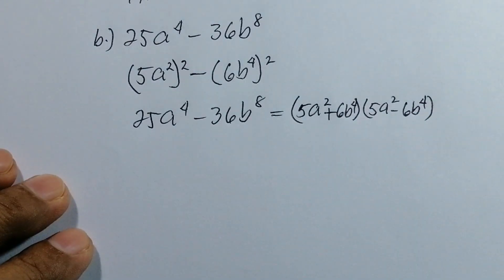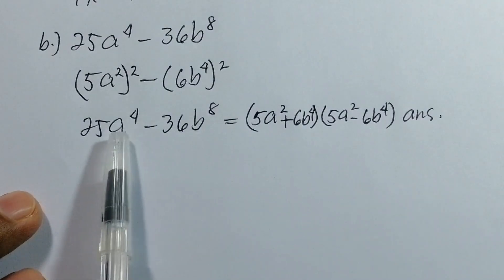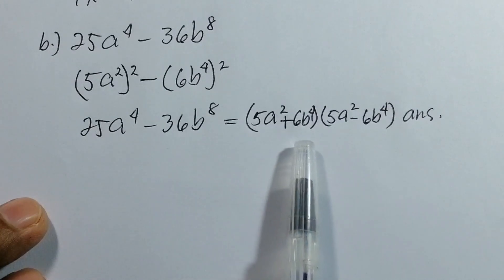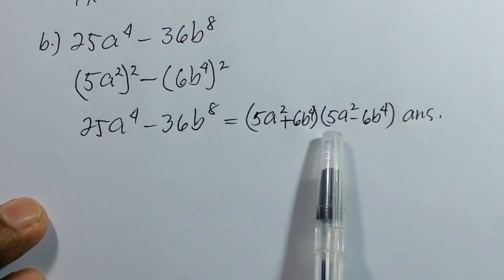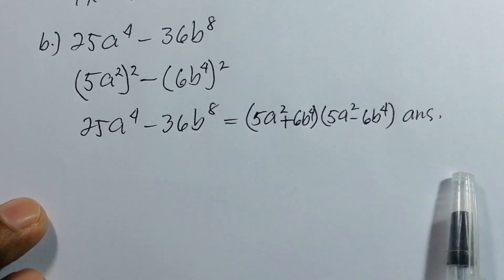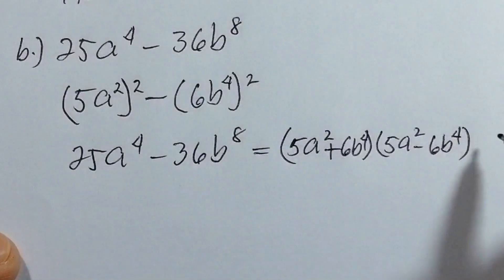Very easy, isn't it? Simple as that. The factored form of 25a⁴ - 36b⁸ is (5a² + 6b⁴)(5a² - 6b⁴) using the difference of two squares. This is our final answer.